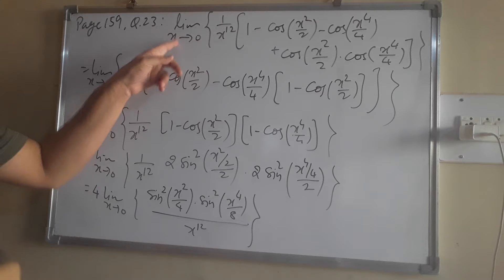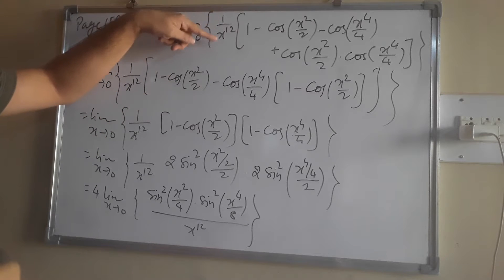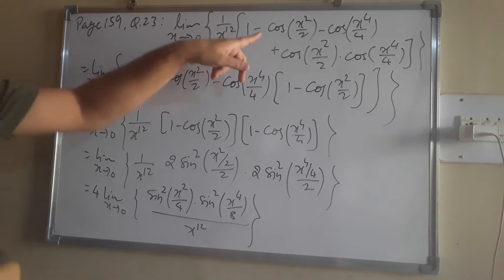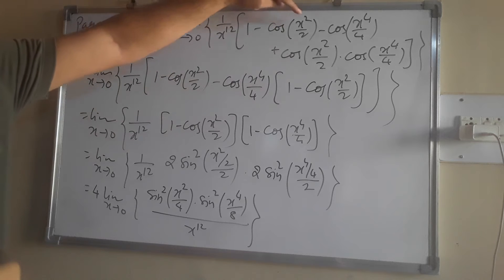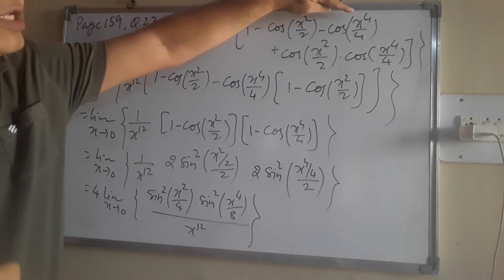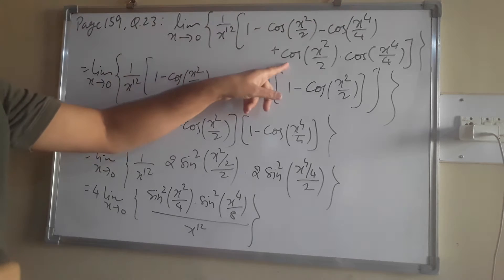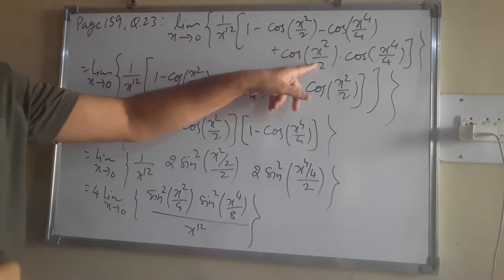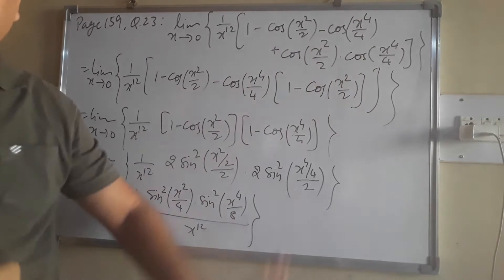Evaluate limit x tends to 0: 1 by x power 12 into 1 minus cos(x power 4 by 4) plus cos(x power 2) into cos(x power 4 by 4).